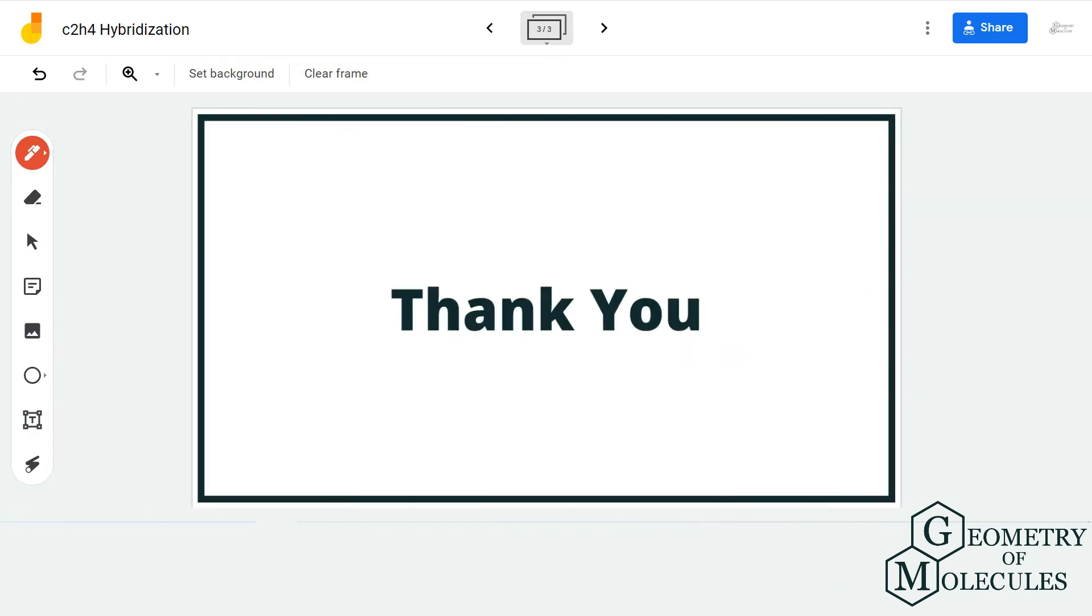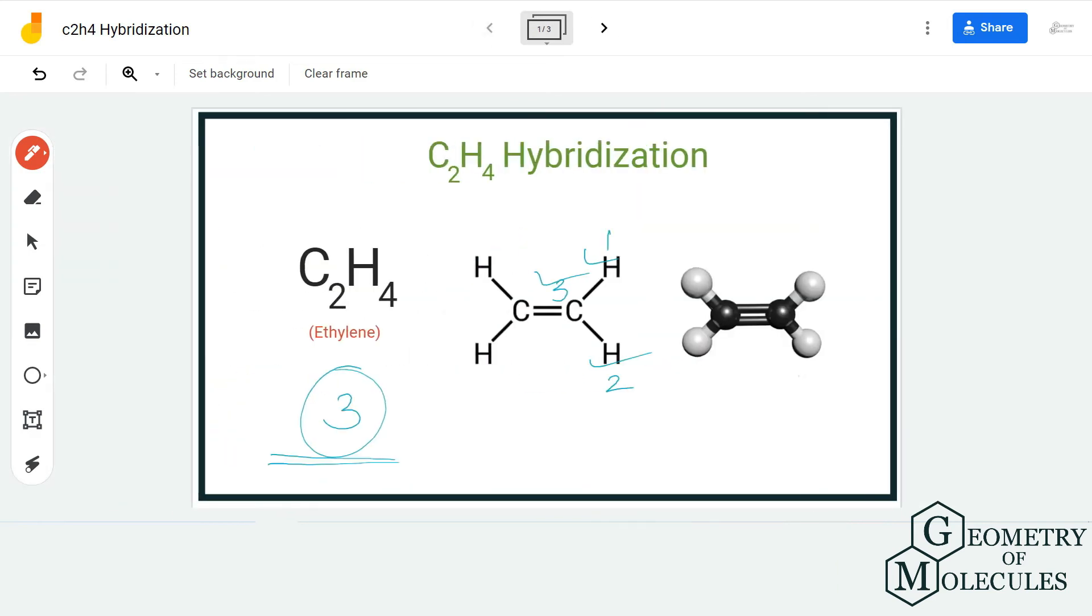Basically, it forms three hybrid orbitals. One will be of s orbital—basically, it forms three hybrid orbitals to accommodate these three bonding pairs of electrons, and as a result, the hybridization of both carbon atoms is sp2.